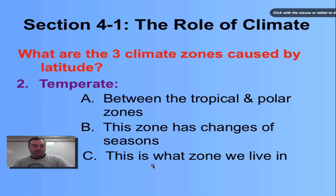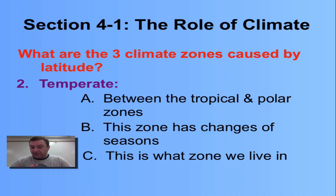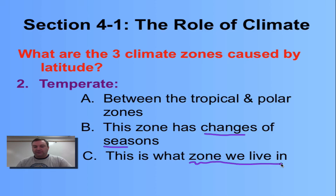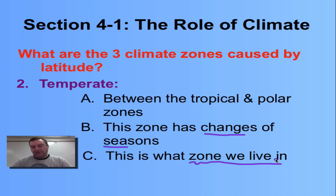The next zone is the temperate — the one that you and I live in. This comes between the tropical and the polar zones and has the changes of seasons: spring, summer, fall, and winter. Some temperate areas may not have those distinct seasons as much as we would here in Indiana, but they'll still have a little bit of it — think of Florida, the southern part of Texas, Mexico, etc.